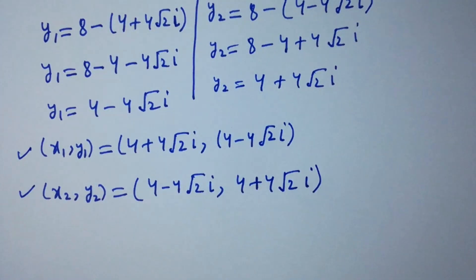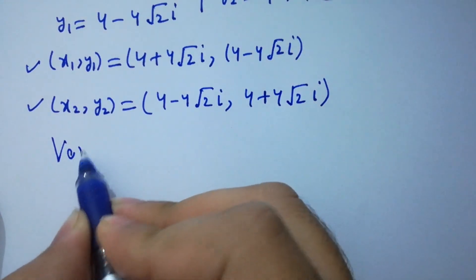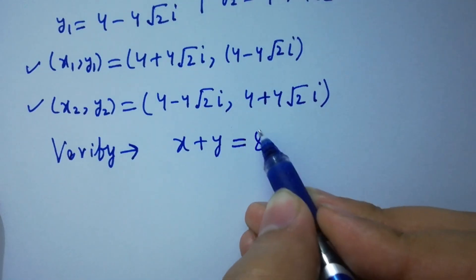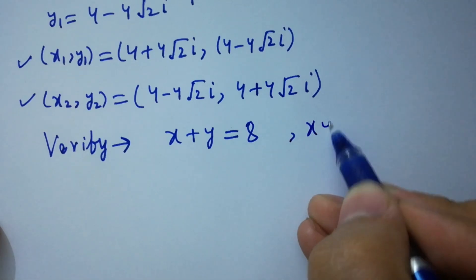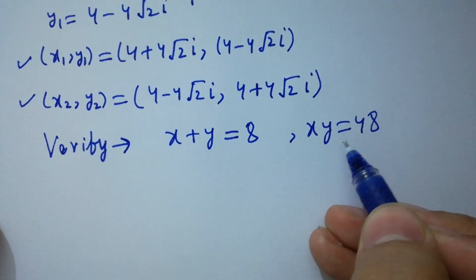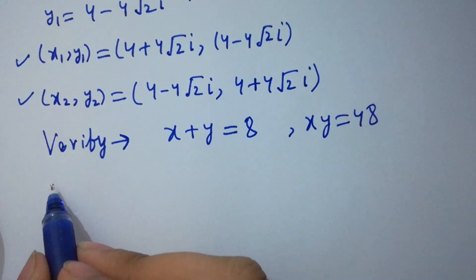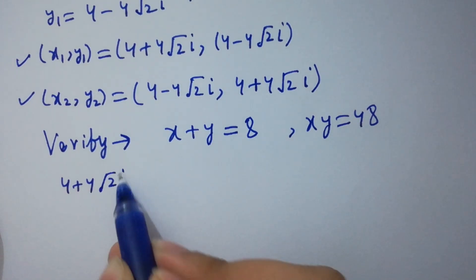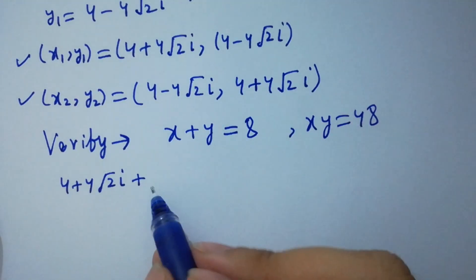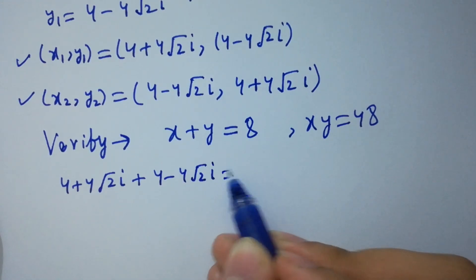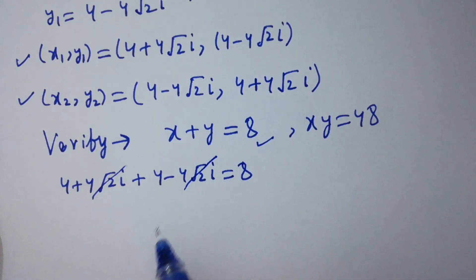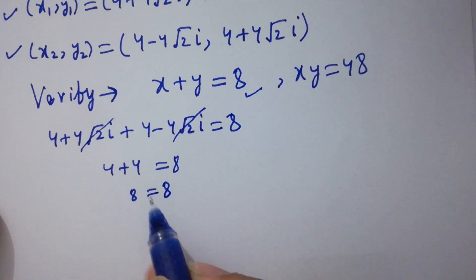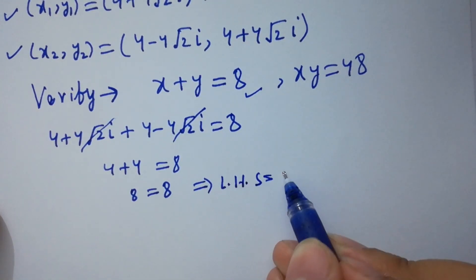So these are the values of x and y. In the next step, I am going to verify equation 1 and equation 2. For x plus y equals 8: substituting x1 and y1, we have (4 plus 4 square root of 2i) plus (4 minus 4 square root of 2i) equals 8. The 4 square root of 2i terms cancel, leaving 4 plus 4 equals 8, so 8 equals 8. Left hand side equals right hand side.